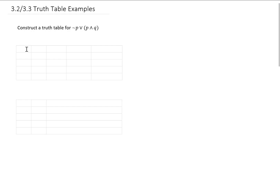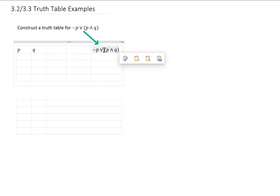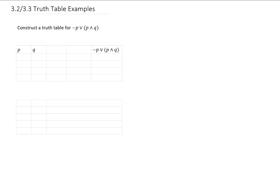Let's construct a truth table for this statement a couple of different ways. No matter which way we do this, we're going to have to enter P and Q in our first two columns. If we construct this truth table using the first method, we're going to stick the entire statement in the final column of the truth table. Then we need to decide how we're going to build to this final statement.